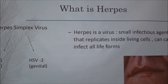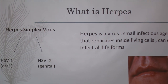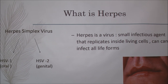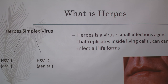First, what is herpes? There are two types of herpes simplex virus. HSV-1 is oral herpes and HSV-2 is genital herpes. I'm going to talk about oral herpes because that is what affects marmosets the most. A virus is a small infectious agent that replicates inside the living cell and can infect all life forms.